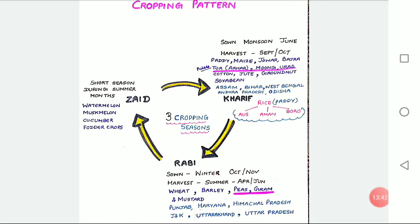In between the Rabi and Kharif seasons, there is a short season during the summer months known as Zaid season. Some of the crops produced during Zaid are Watermelon, Muskmelon, Cucumber, vegetables and fodder crops. Sugarcane takes almost a year to grow.